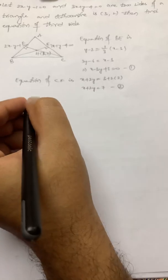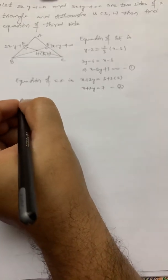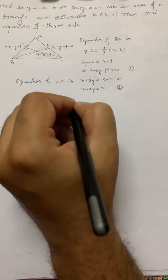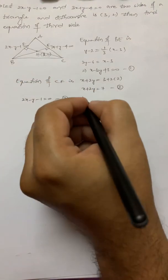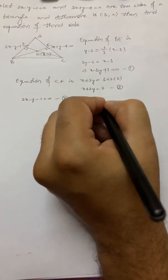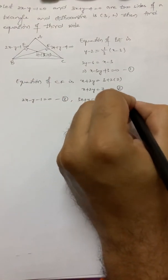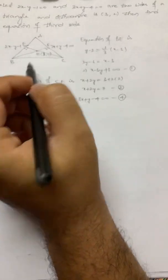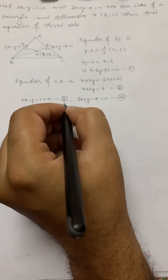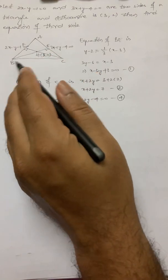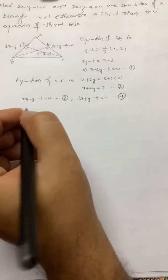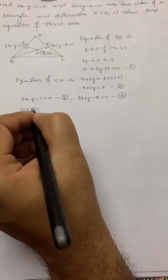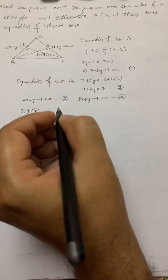So we already have two more lines. We will call 2x minus y minus 1 equal to 0 as line 3, and 3x plus y minus 4 equal to 0 as line 4. AB is line 3 and BE is line 1. So solving lines 1 and 3 together will give us vertex B.